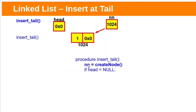So this new node pointer in the insertTail function will be pointing to the newly created node. The newly created node address is 1024, and that will be stored within this new node pointer. Initially, the global variable head will be null, meaning the linked list is empty — no nodes have been added yet to this list. So we are going to add this node as the first node in our linked list, so here head is null.